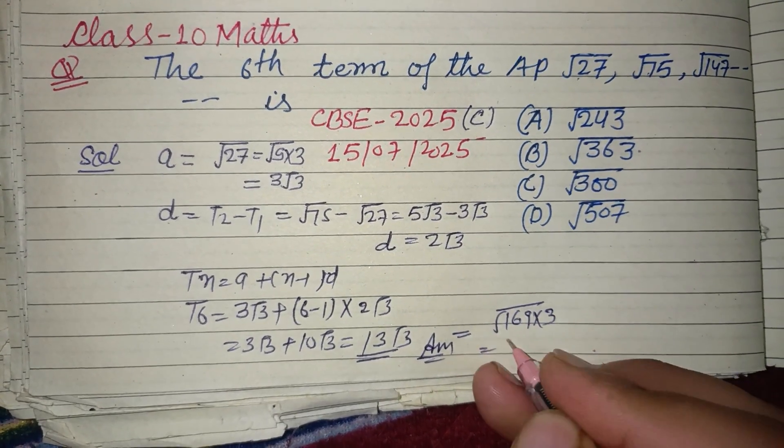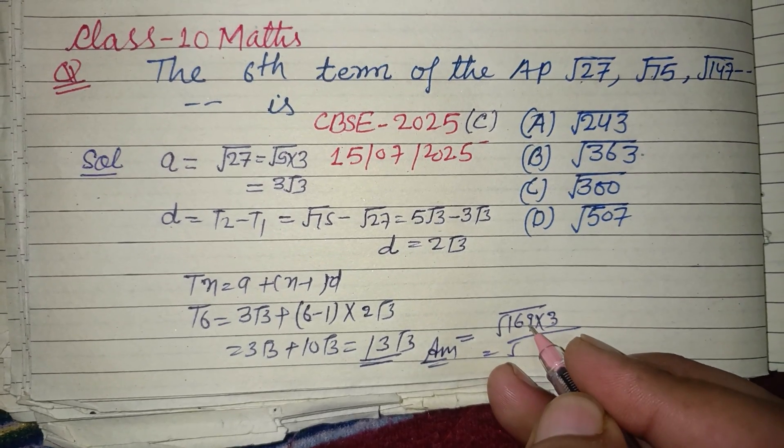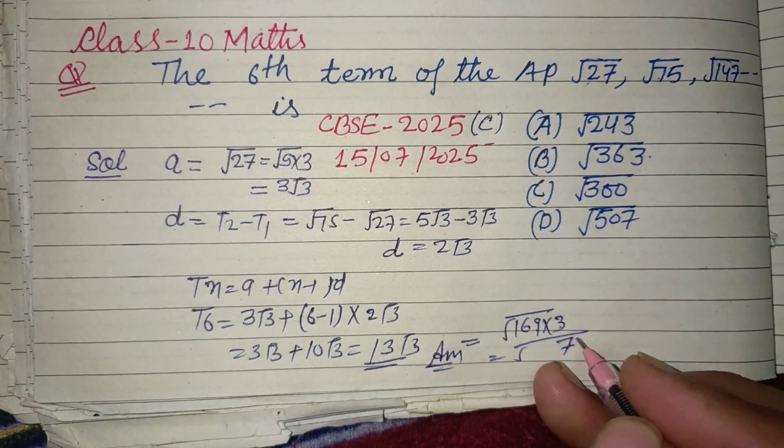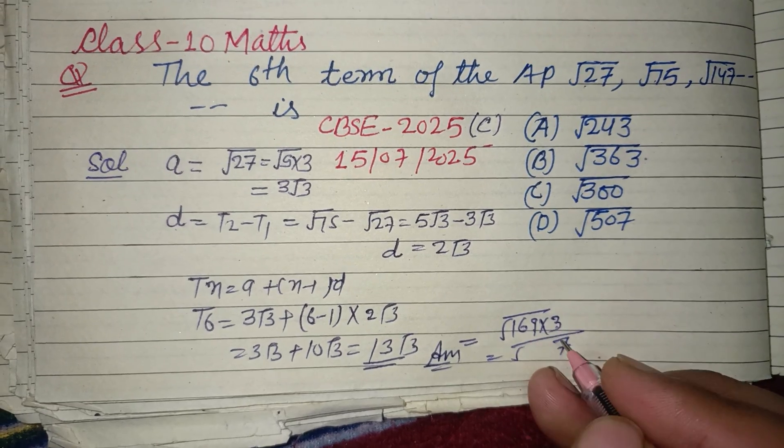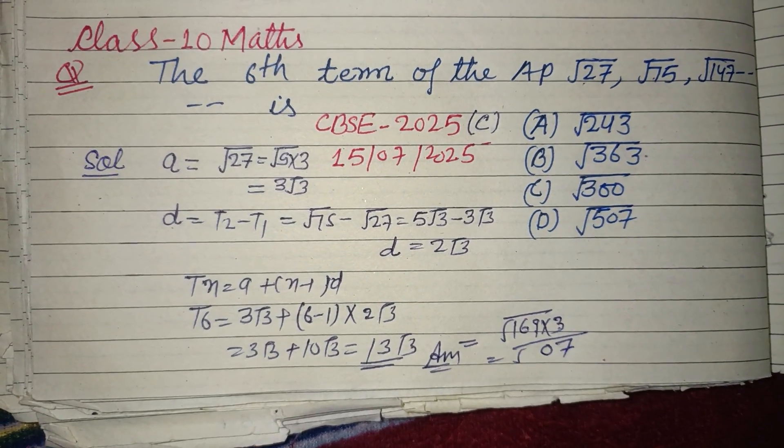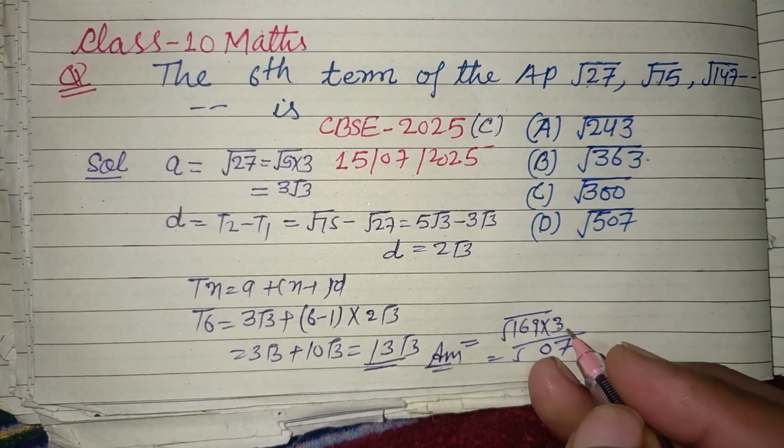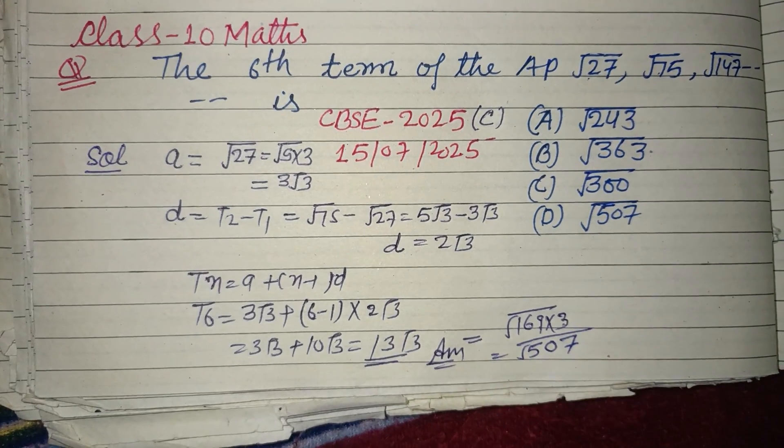times 3. That is: 169 × 3 = 507. So √507